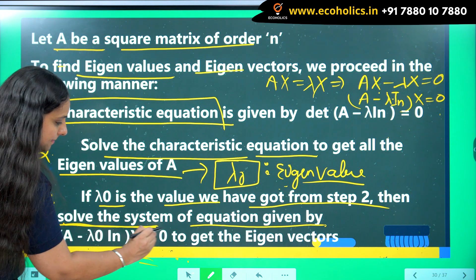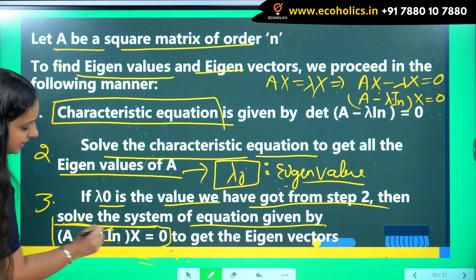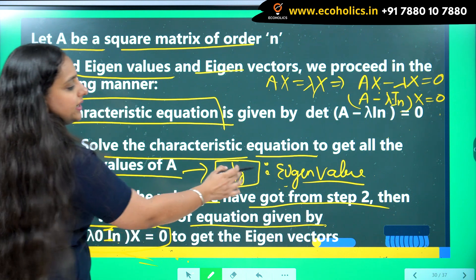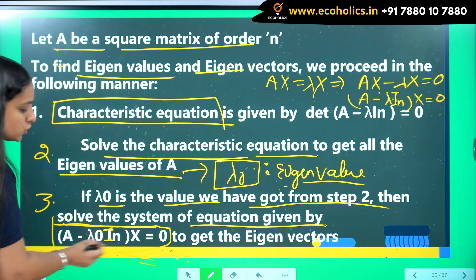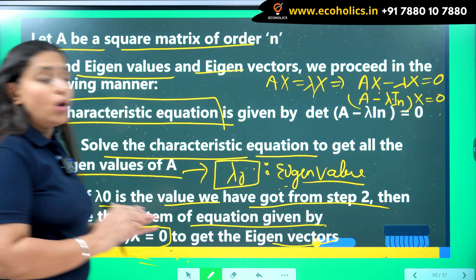You will be solving A minus lambda 0 into x. This is identity matrix and nothing. Lambda 0 is the value you will get in step number 2. So you will solve this equation to get the eigenvectors. This is how you have to solve.